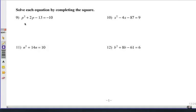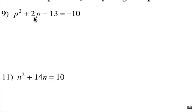In number nine, we have p squared plus 2p minus 13 equals negative 10. Now, first question is, can I make a perfect square trinomial? So if I look at p squared plus 2p and then the negative 13, hmm, that negative 13 doesn't work, does it? So we're going to have to get rid of it by adding 13 to each side.